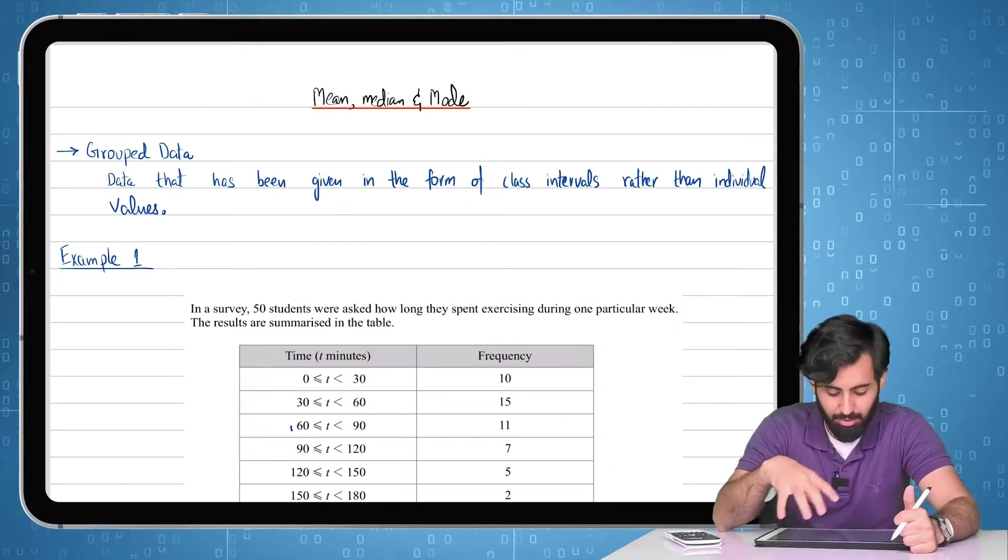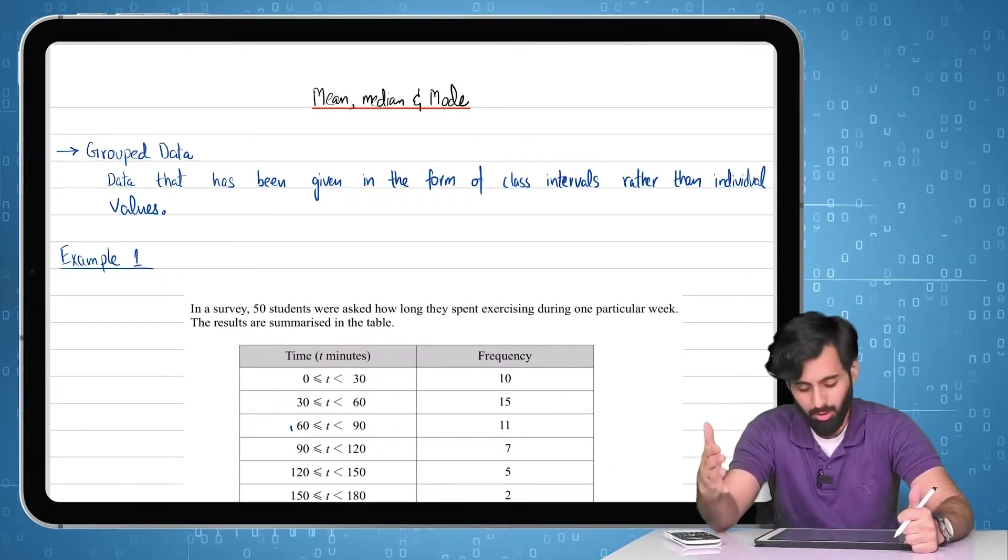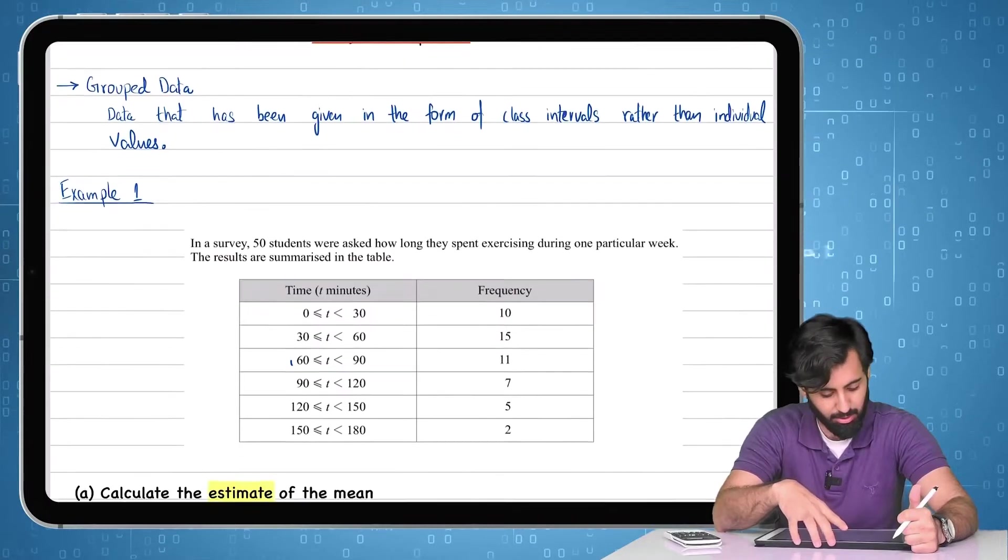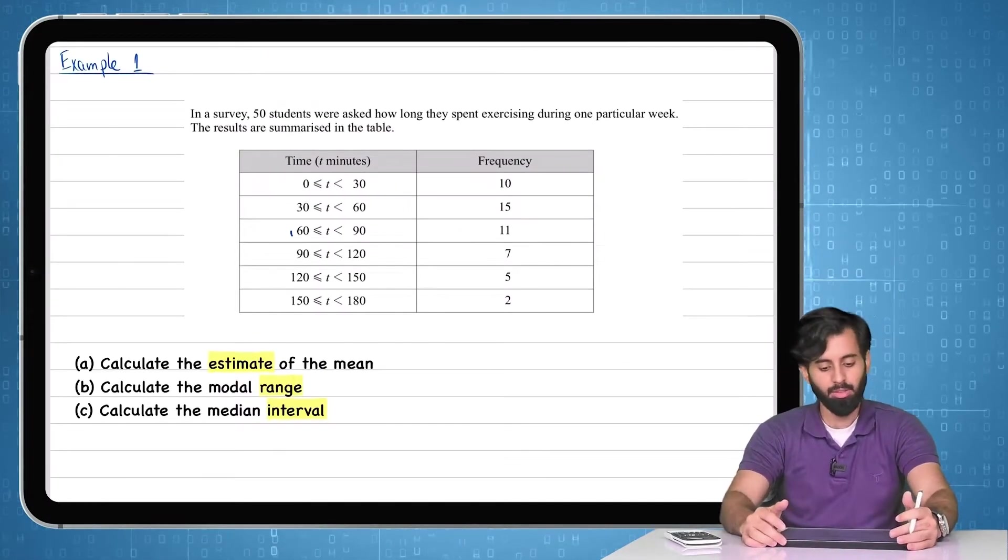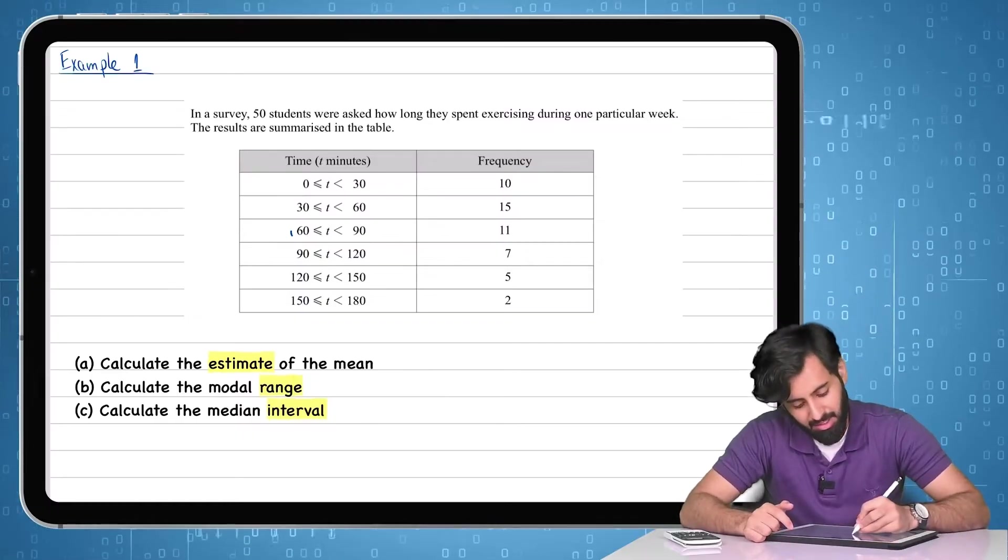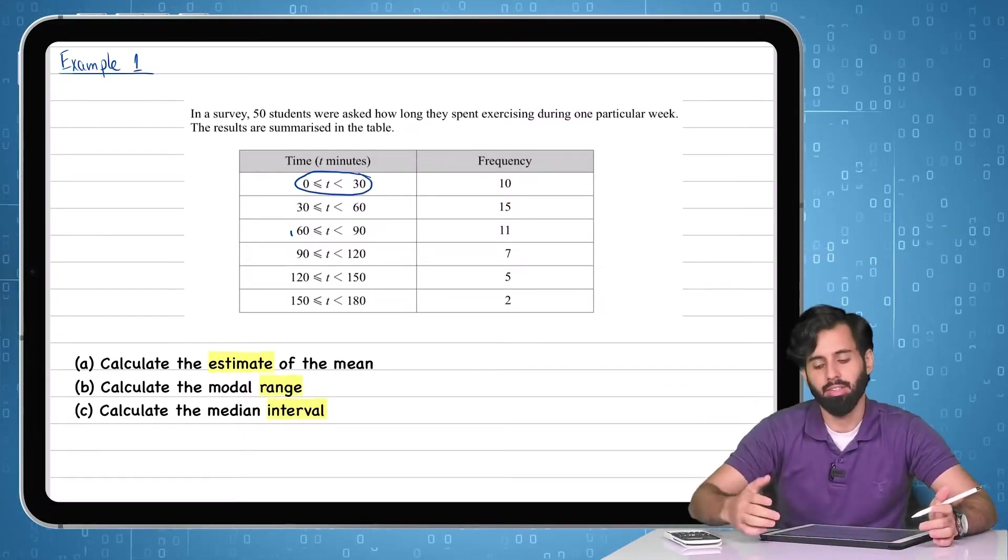So example one here says in a survey, 50 students were asked how long they spent exercising during one particular week. The results are summarized in the table. Now, as you can see, this right here is a class and 0 to 30 is the interval.